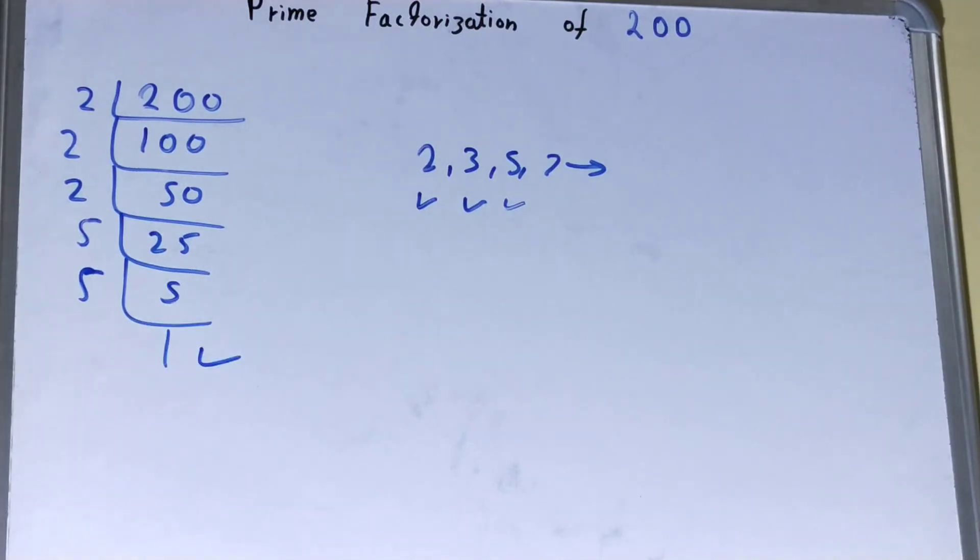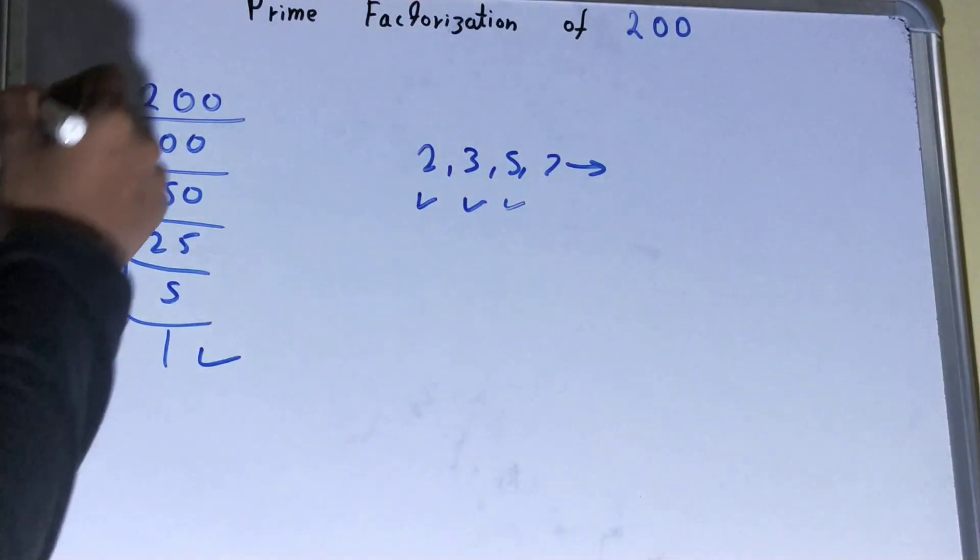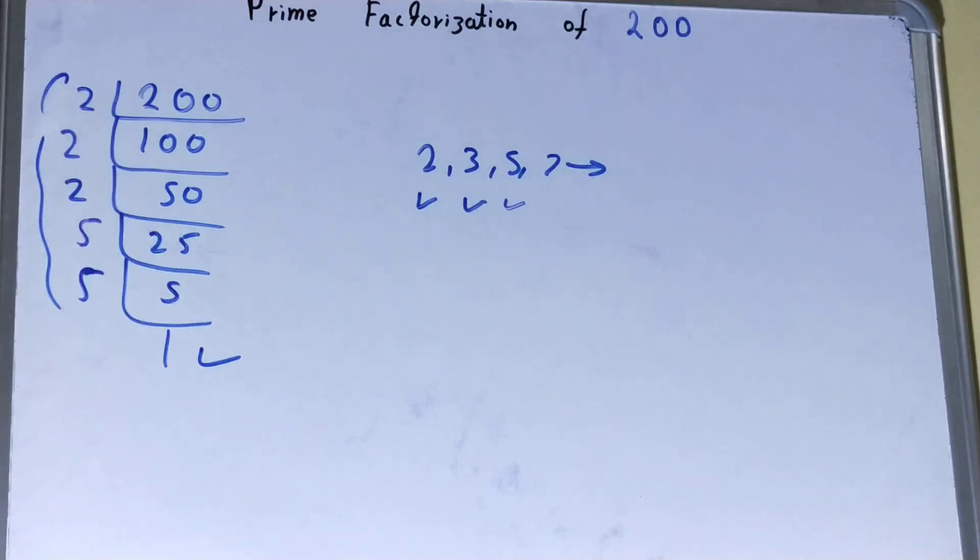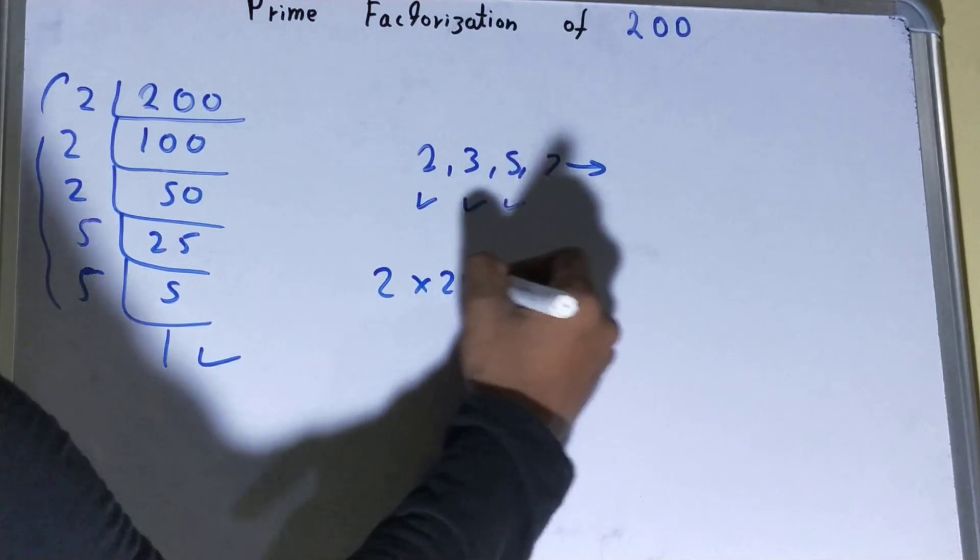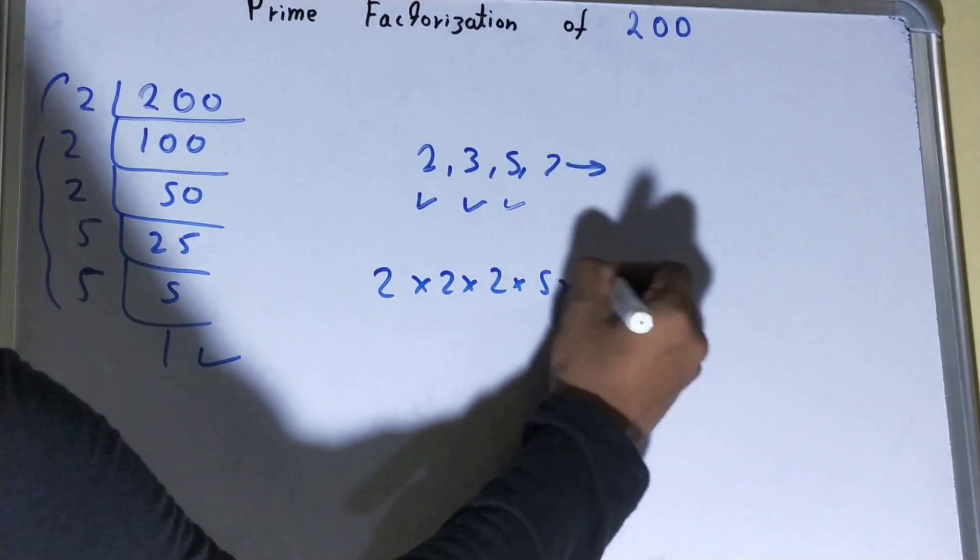Once you get 1 your work is totally done. Whatever you have on the left hand side will be your set of prime factors for the number 200, that is 2 into 2 into 2 into 5 into 5.